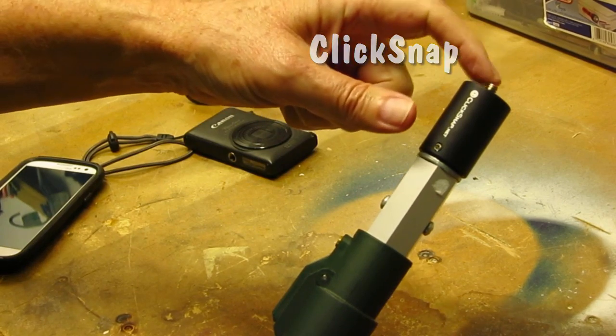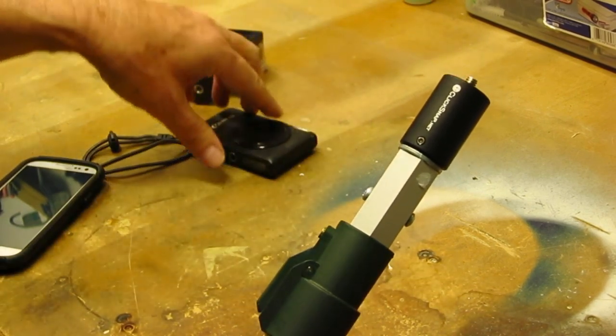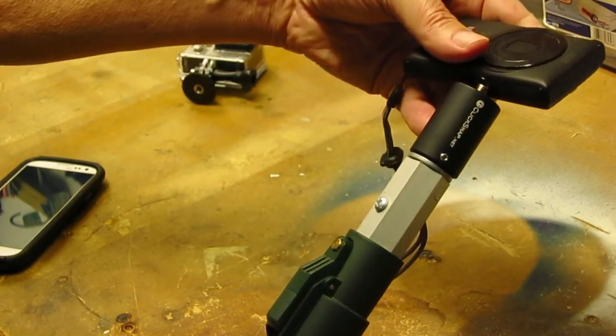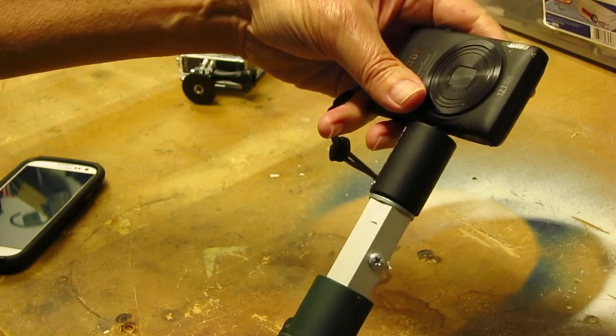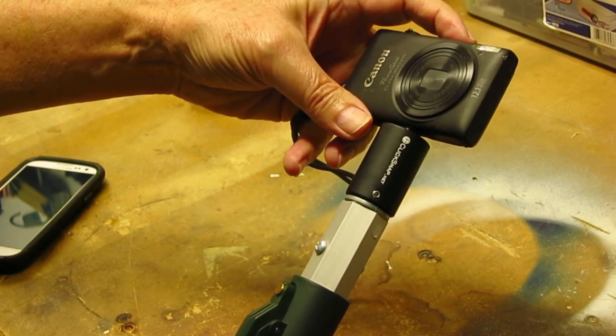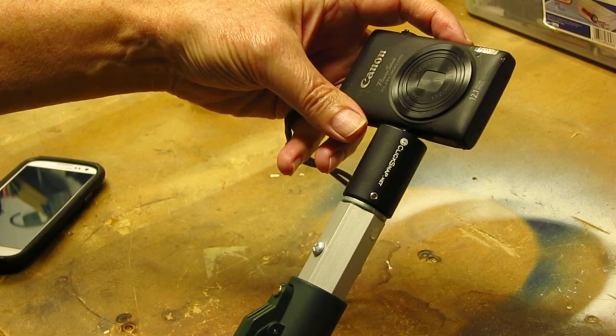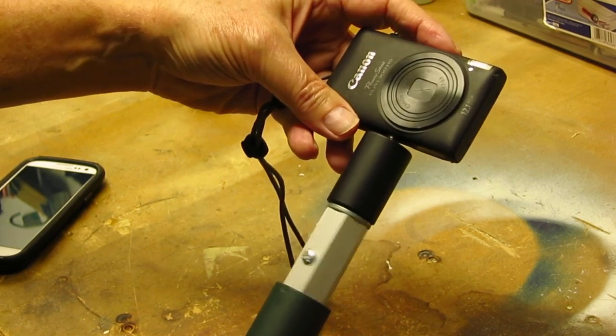Once you have this, you have this little tripod adapter on the end right here, and you can screw on any camera that has a tripod mount. Once you have the camera on tightly, you can set the camera in video mode, or you can set it in photo mode and set interval photos.